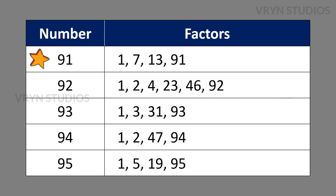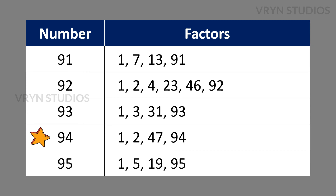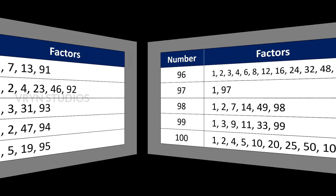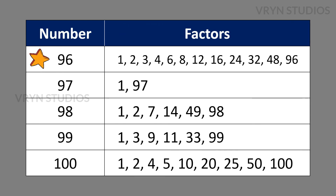The factors for the number 91 is 1, 7, 13 and 91. The factors for the number 92 is 1, 2, 4, 23, 46 and 92. The factors for the number 93 is 1, 3, 31 and 93. The factors for the number 94 is 1, 2, 47 and 94. The factors for the number 95 is 1, 5, 19 and 95. The factors for the number 96 is 1, 2, 3, 4, 6, 8, 12, 16, 24, 32, 48 and 96.